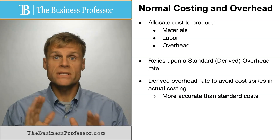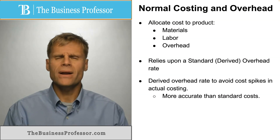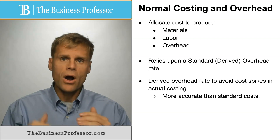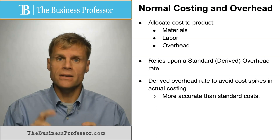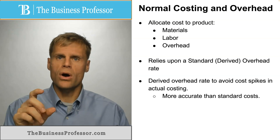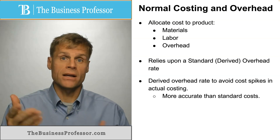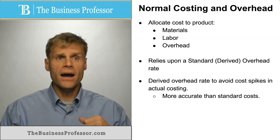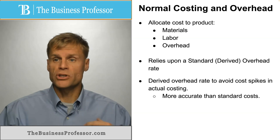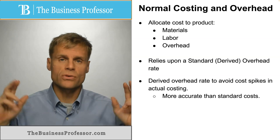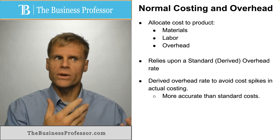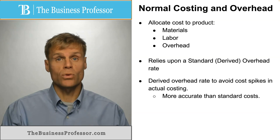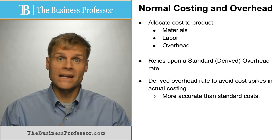The great thing about using a derived overhead rate is it smooths expenses out. You avoid the cost spikes that you would otherwise see if you reported actual costs as they occurred, like activity-based costing would allocate. And it's certainly more accurate than just projected cost, or what we call standard costing, where you put an expected amount rather than the actual cost rate as it's happening.